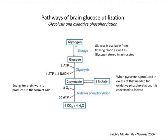The pathways of brain glucose utilization include glycolysis and oxidative phosphorylation, with energy produced as ATP. Glucose is available from flowing blood, so the amount of glucose in the brain is highly dependent on blood glucose in the systemic circulation. Also from glycogen, though the brain has reduced availability of glycogen stored in astrocytes. When pyruvate is produced in excess of that needed for oxidative phosphorylation, it is converted to lactate — a natural phenomenon given the high level of glucose utilization.